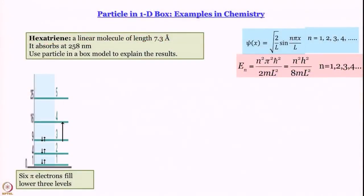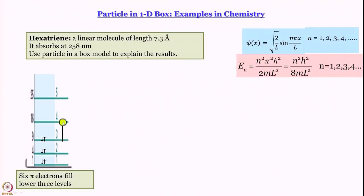The molecular orbital energy levels are approximated by 1D box energy levels in hexatriene. How many pi electrons are there? There are 6, and each molecular orbital can accommodate 2, so we fill levels n=1, 2, 3. Therefore n=3 is the level of origin of any upward transition, and the lowest energy transition takes it to level 4, because odd-to-even and even-to-odd transitions are only allowed.